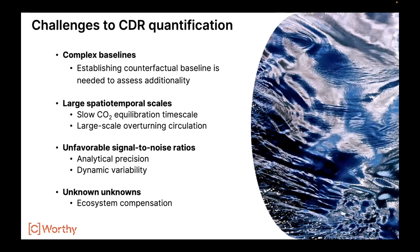Why is ocean CDR quantification so challenging? One reason is that the baselines are complicated. Another is that the signals associated with ocean CDR manifest over very large spatiotemporal scales. CO2 gas equilibration is slow, and CDR does not happen until carbon is transferred from the atmosphere into the ocean. The signal-to-noise ratios are unfavorable — the magnitude of perturbations induced by CDR deployments are very small relative to the mean quantities, like dissolved inorganic carbon, and relative to the variability in those quantities. There's also concern about ecosystem compensation response or feedback in the ocean ecosystem that might diminish the efficacy of CDR impacts.